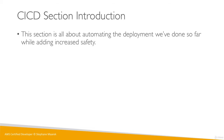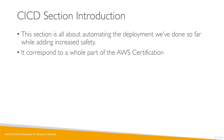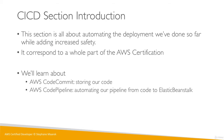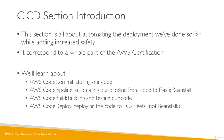CICD stands for continuous integration and continuous deployment — or sometimes delivery. This section is all about automating everything we've done so far to increase safety. The AWS certification has a whole part dedicated to CICD, so it's extremely important to understand and practice. We're going to learn about CodeCommit to store our code, CodePipeline to automate the pipeline from code all the way to Elastic Beanstalk, CodeBuild to build and test our code, and CodeDeploy to deploy to EC2 fleets — not Beanstalk.